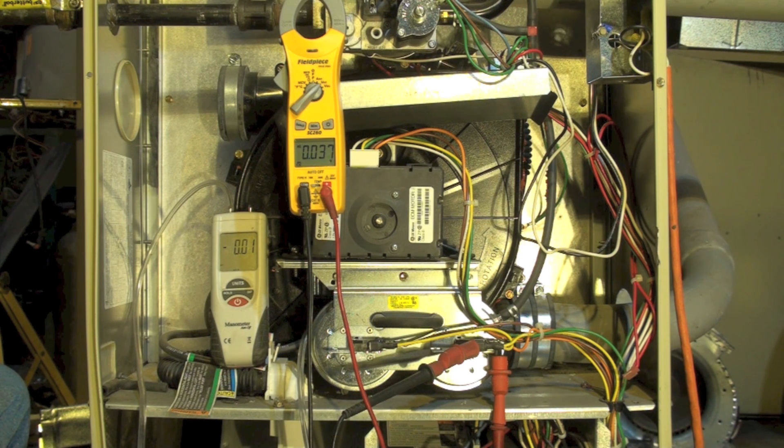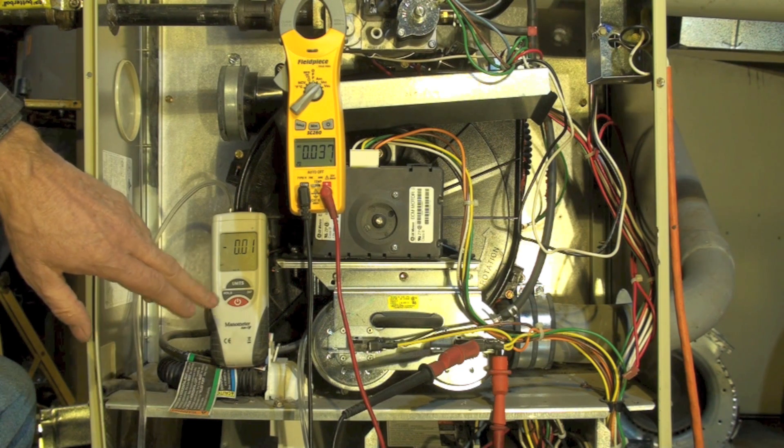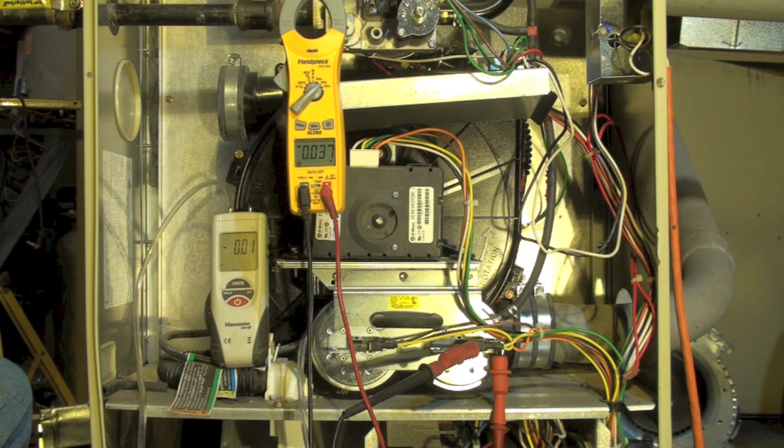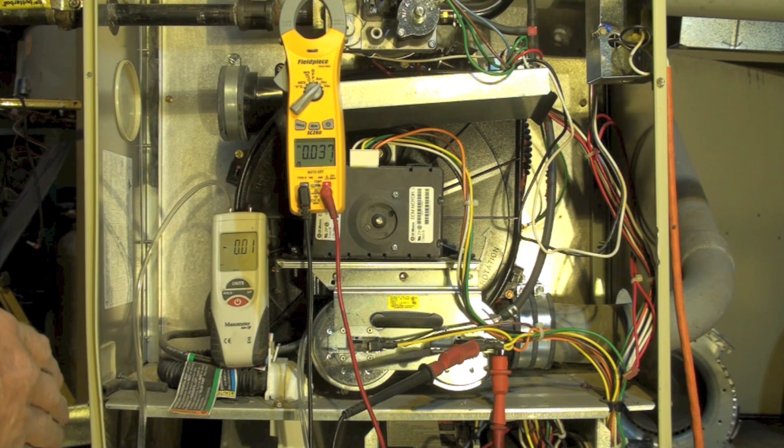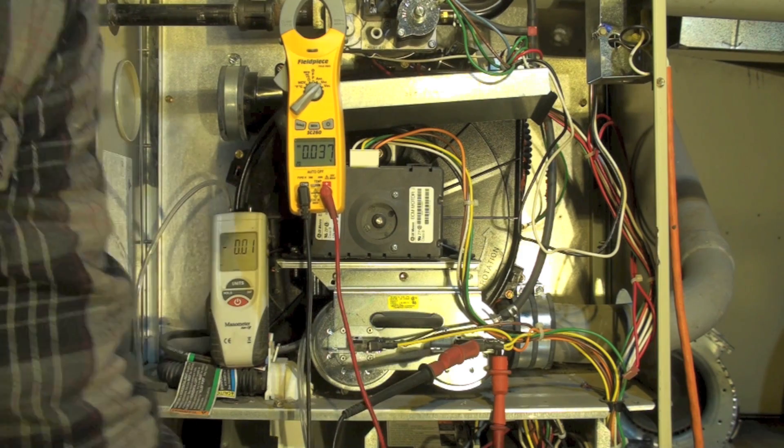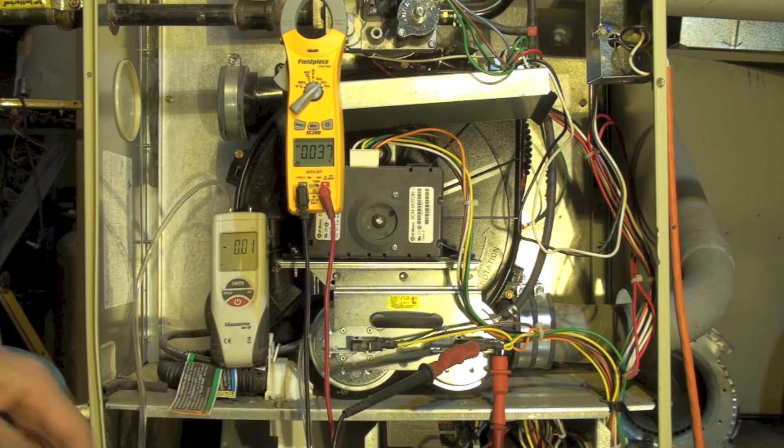And it's going to go up well above what it needs to make the pressure switch. You'll see the pressure go way up on this and you'll see that pressure switch close. And then once it lights, it's going to drop down. It's going to remember the speed it was when the pressure switch made and it's going to go back and be a little above that. So let's watch it work. You have to listen close to the inducer.